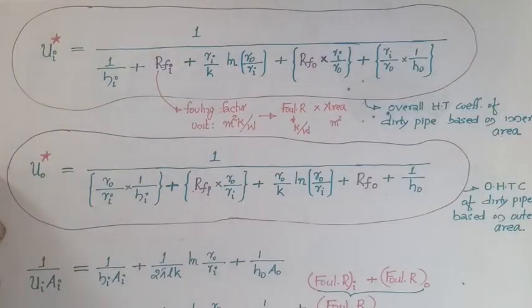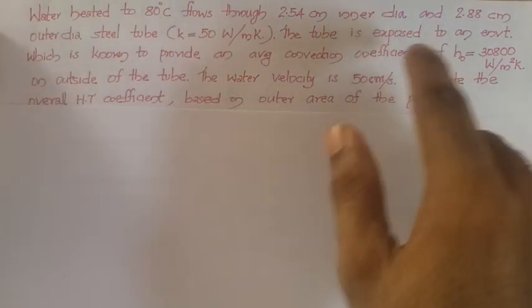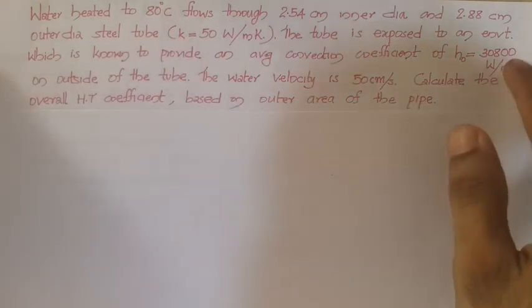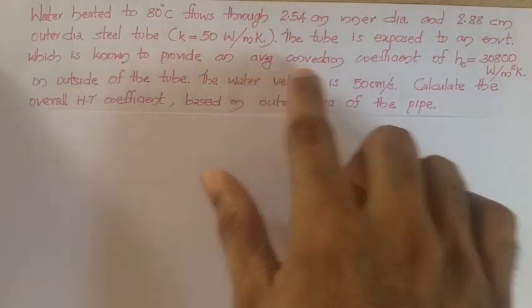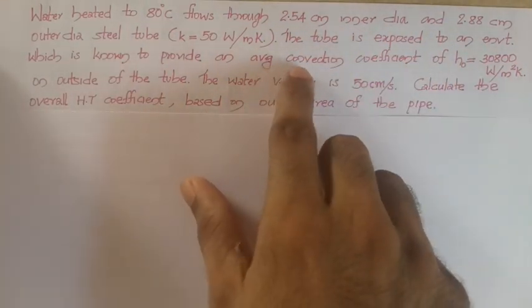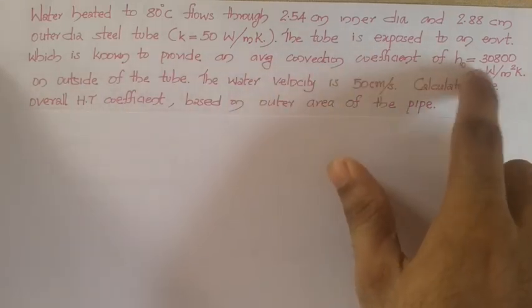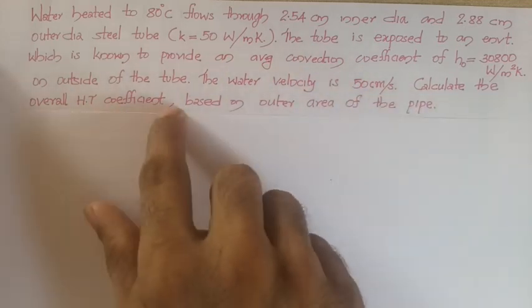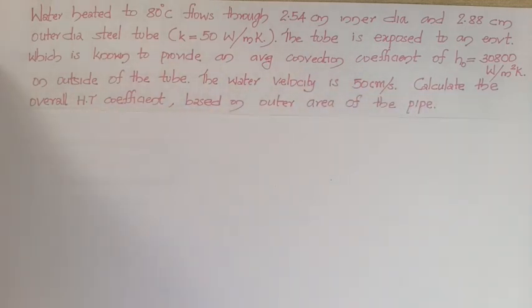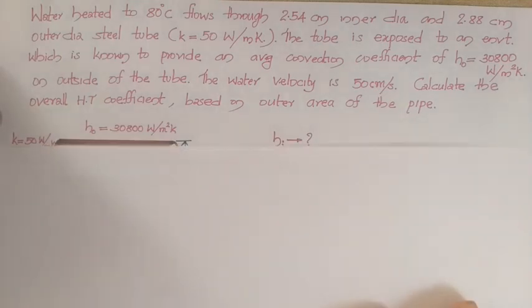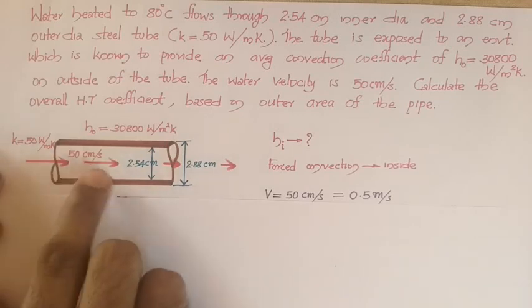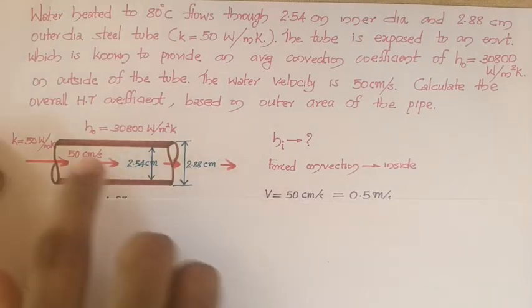We will now solve one problem based on the overall heat transfer coefficient. Here, water is flowing through a pipe of specified dimensions; the thermal conductivity k of the pipe material is given, and it is exposed to an environment where the average convection coefficient on the outer side, H0, is given. The water velocity is also given. We need to calculate the overall heat transfer coefficient.